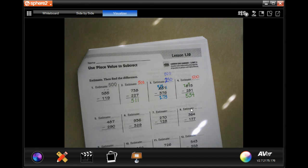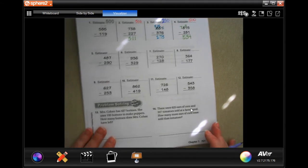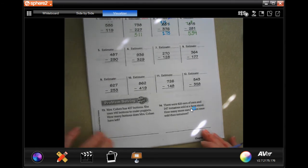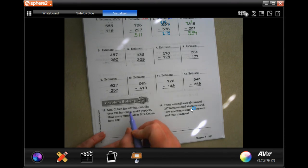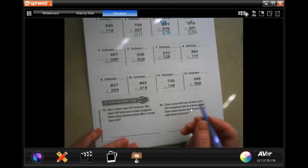All right, guys, you guys are going to do your number 12. We're going to go down and we're going to do number 13. Ms. Cohen has 427 buttons. She uses 195 buttons to make puppets. How many buttons does Ms. Cohen have left?